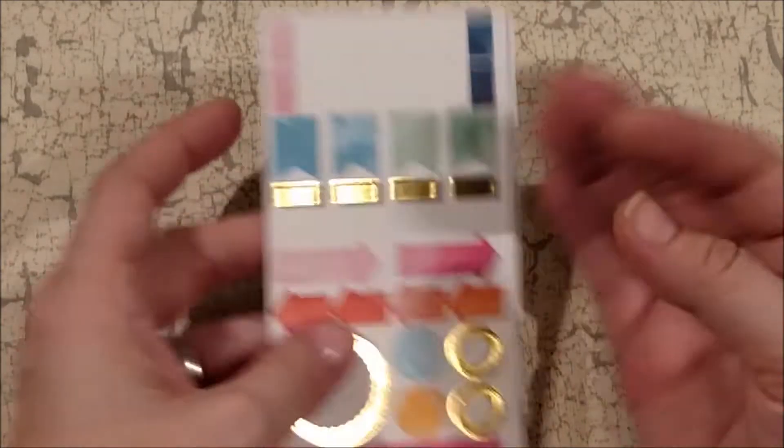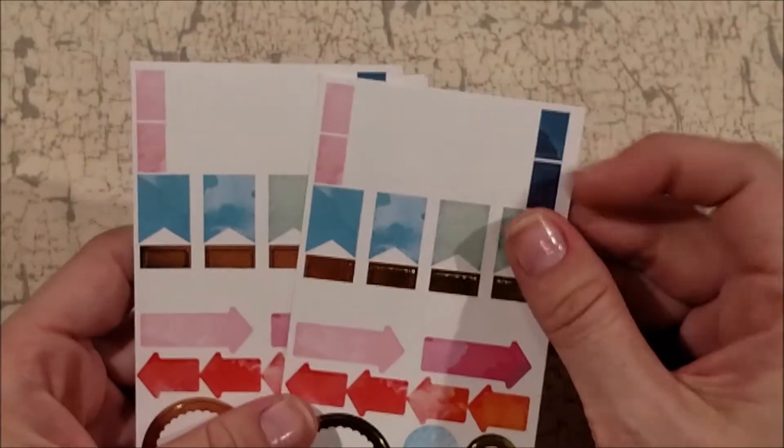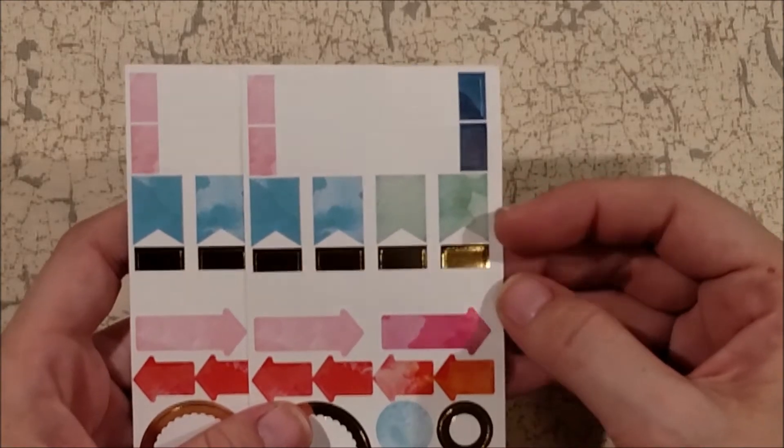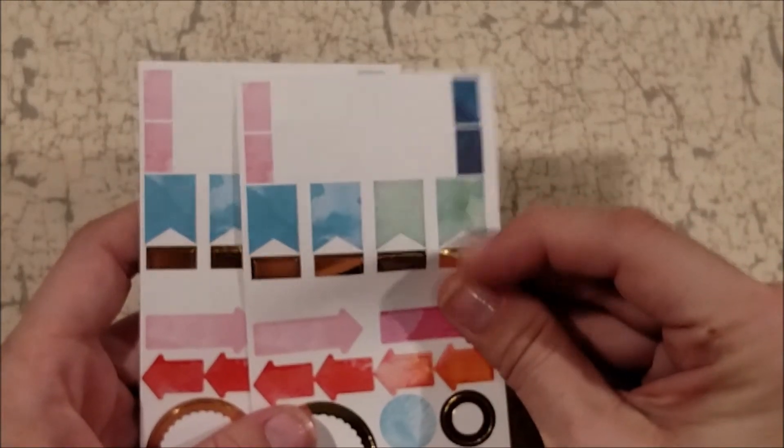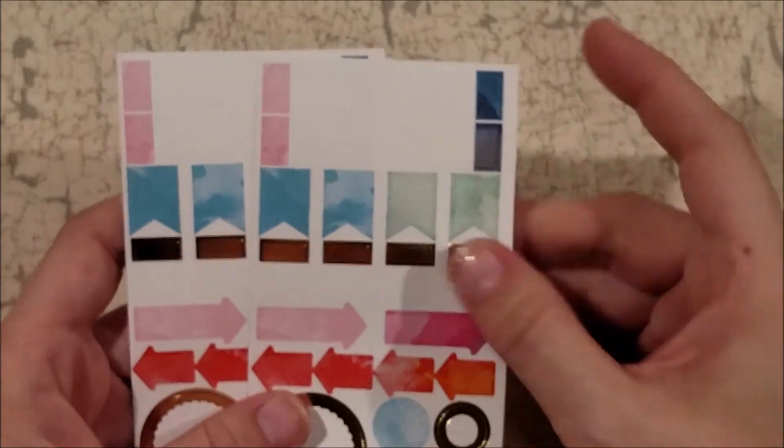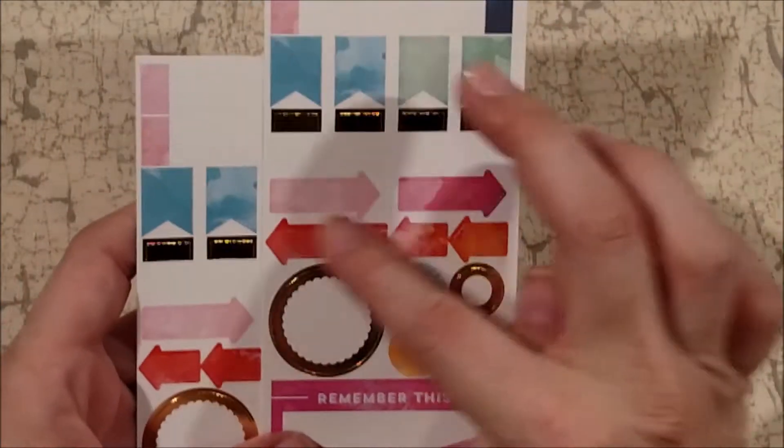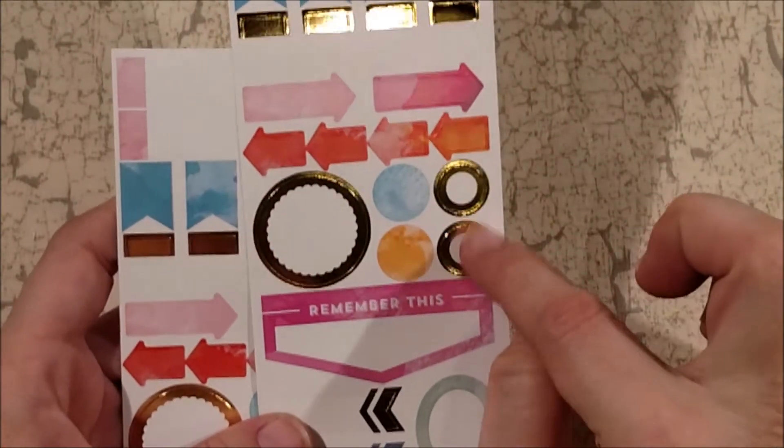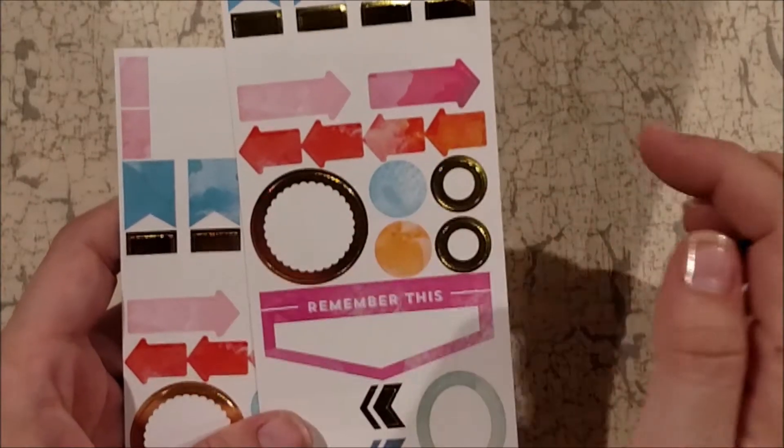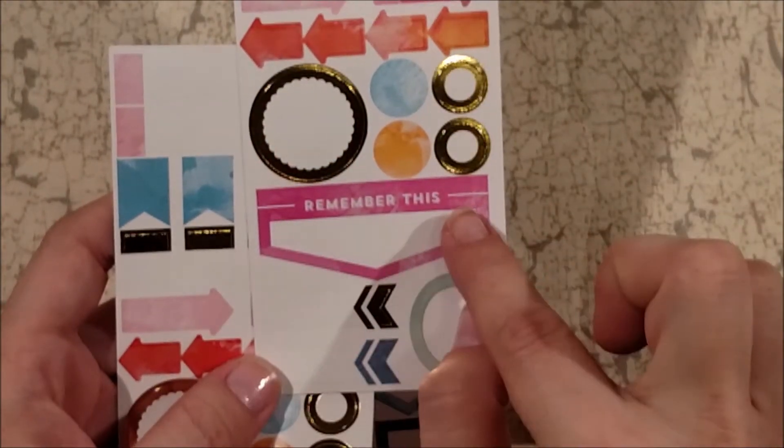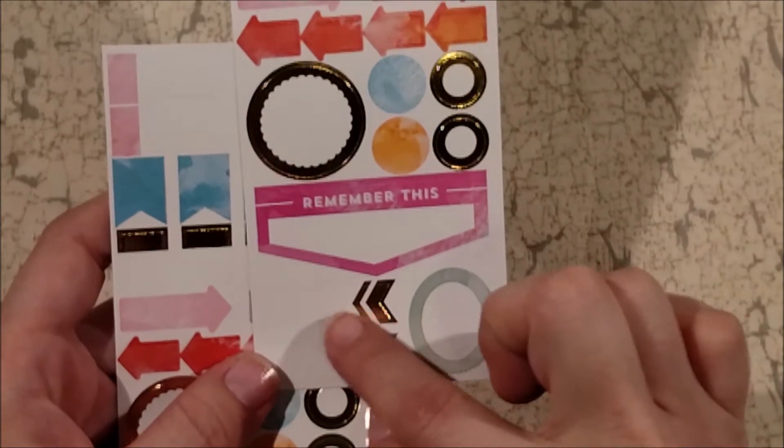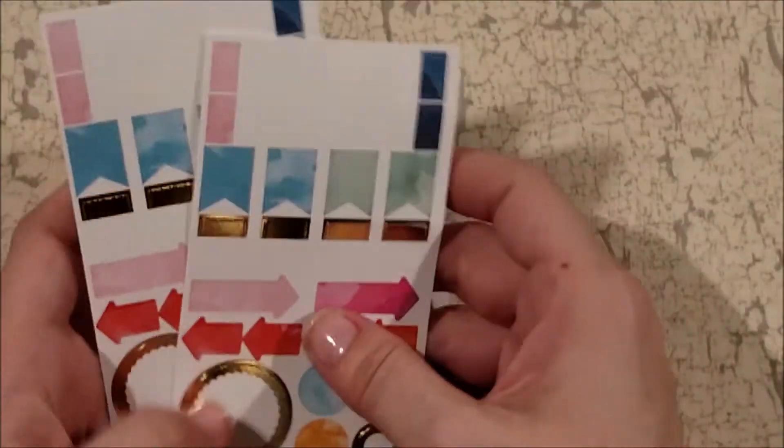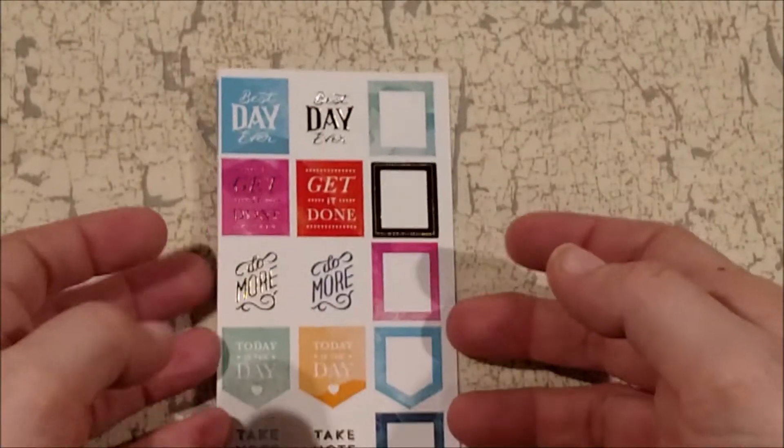And then you get two sheets of this one which these are some little arrow labels and some watercolor flags, and then these are little flags that have gold foiling at the top and then they're white on the bottom. Some pink watercolor arrows, some reddish orange watercolor arrows, some gold circles, watercolor circles, a framed gold circle, a 'remember this,' another like arrowed label in gold, a blue one, and then this oval sticker.